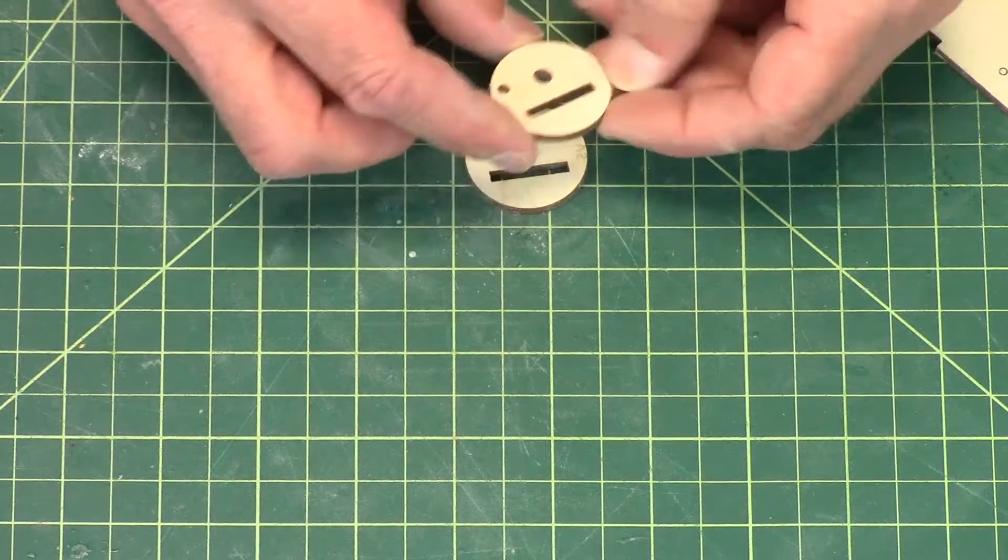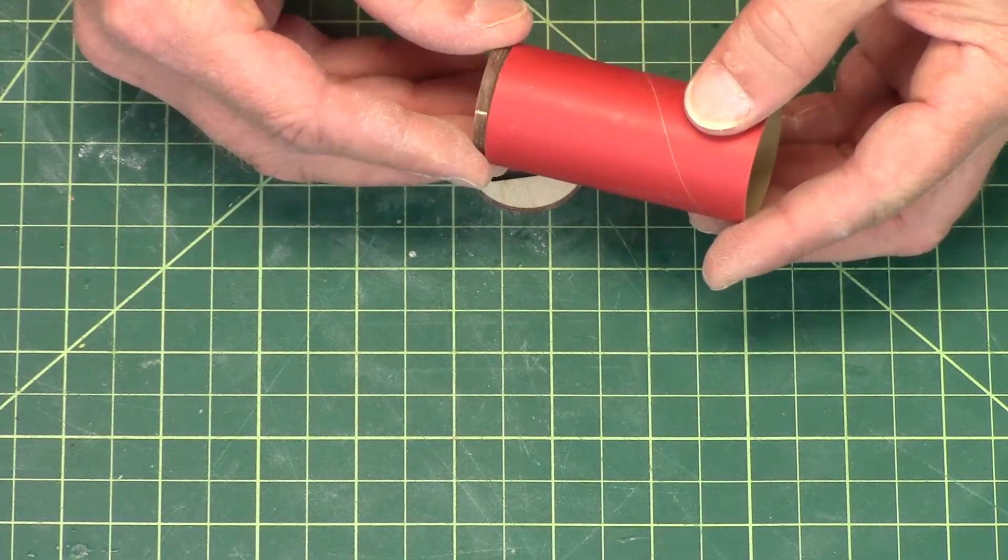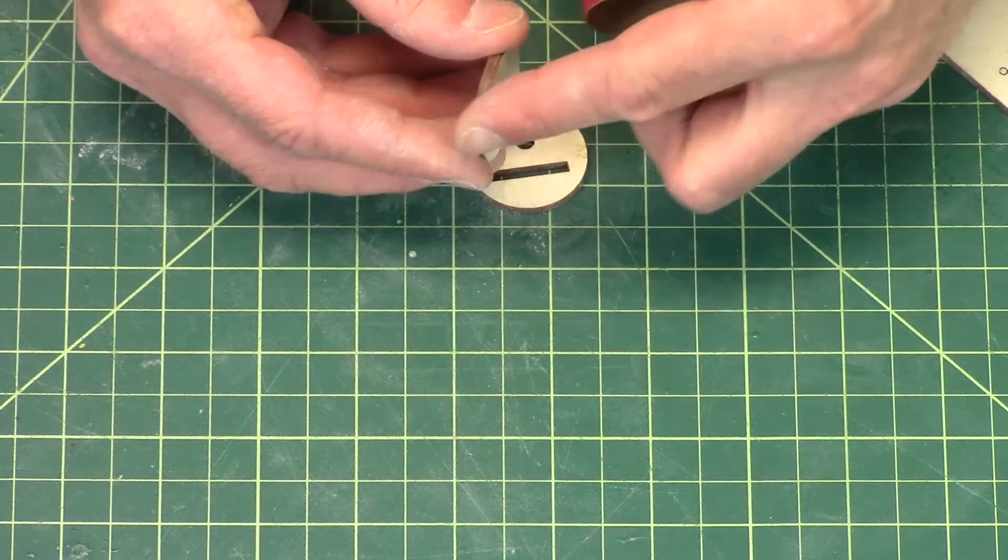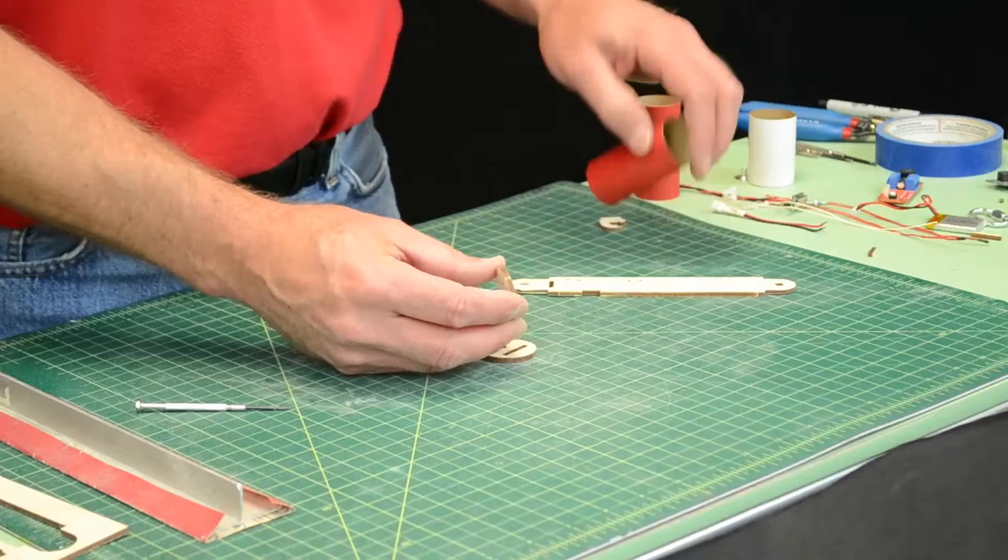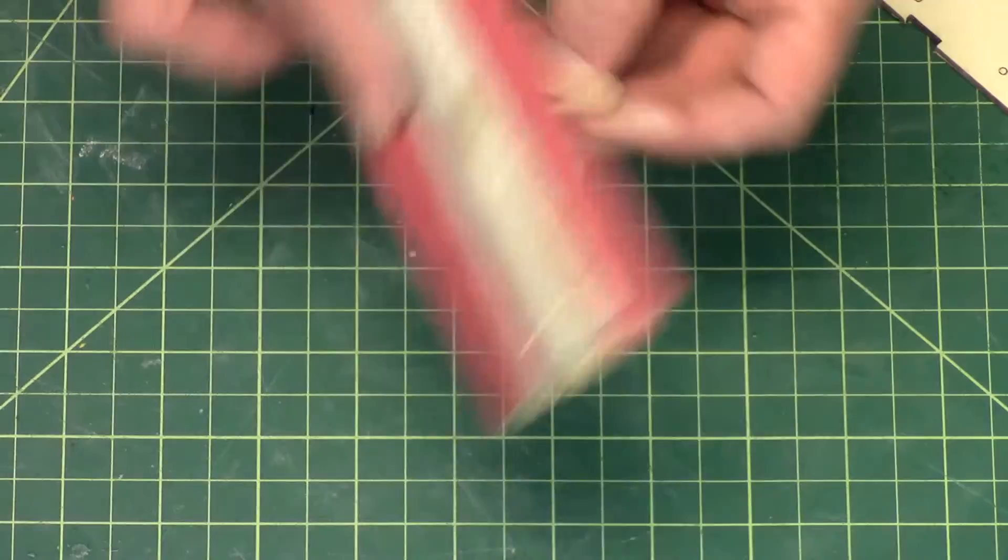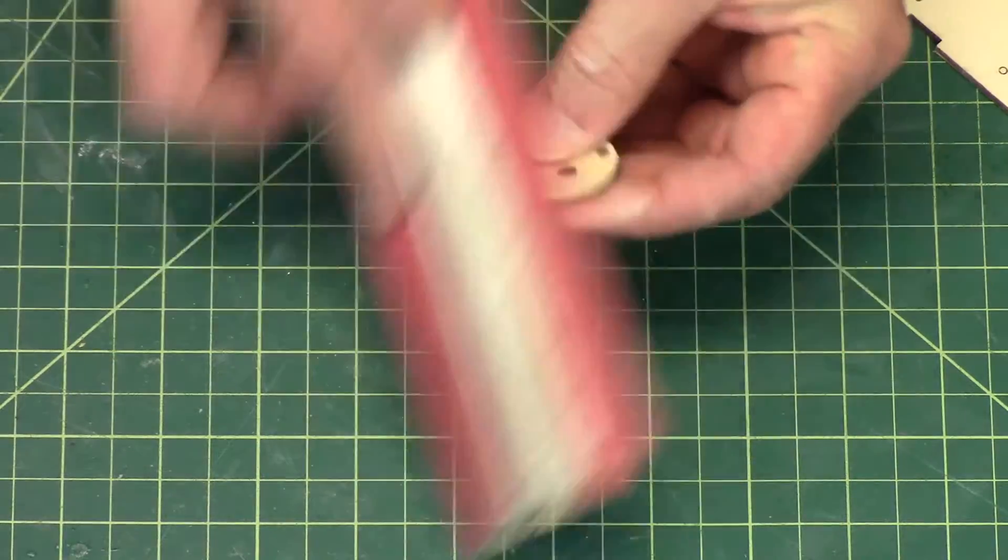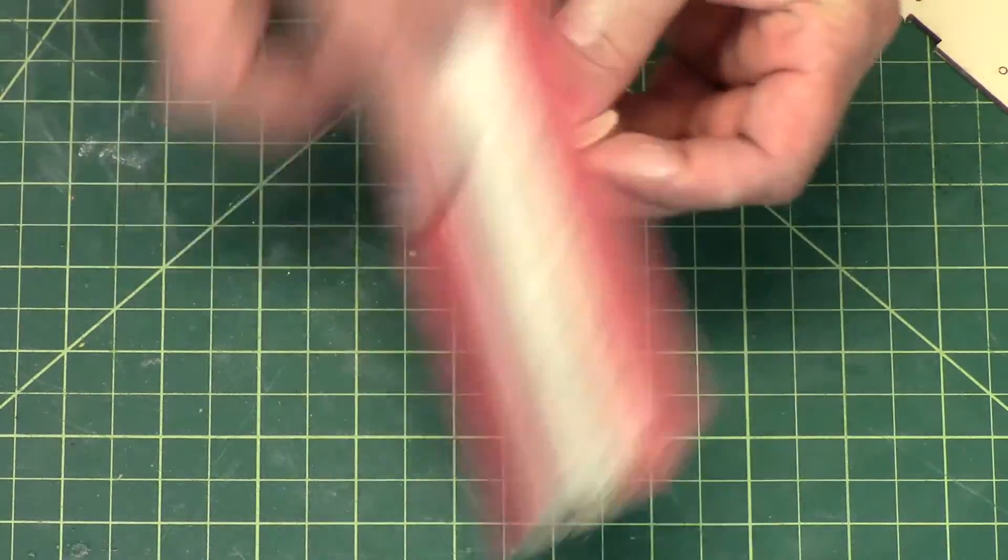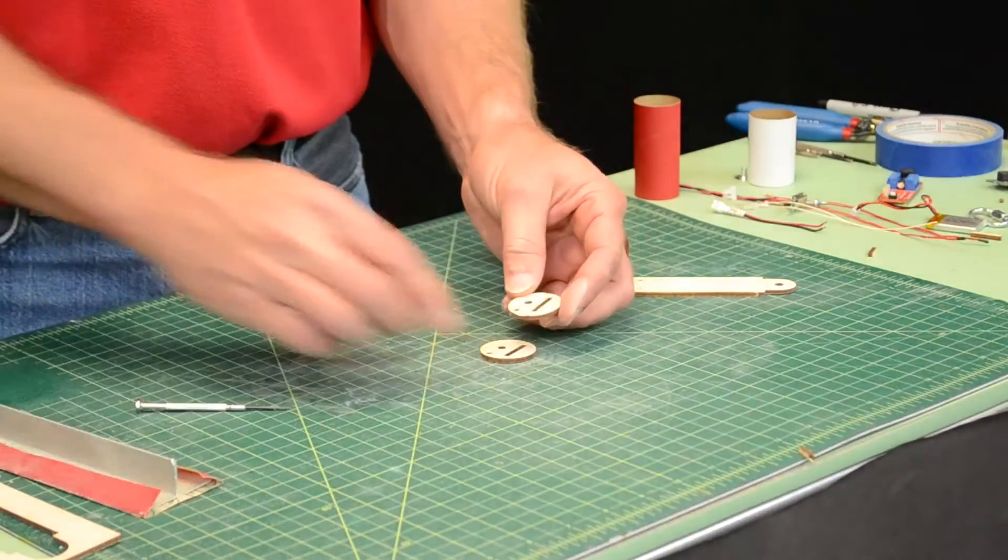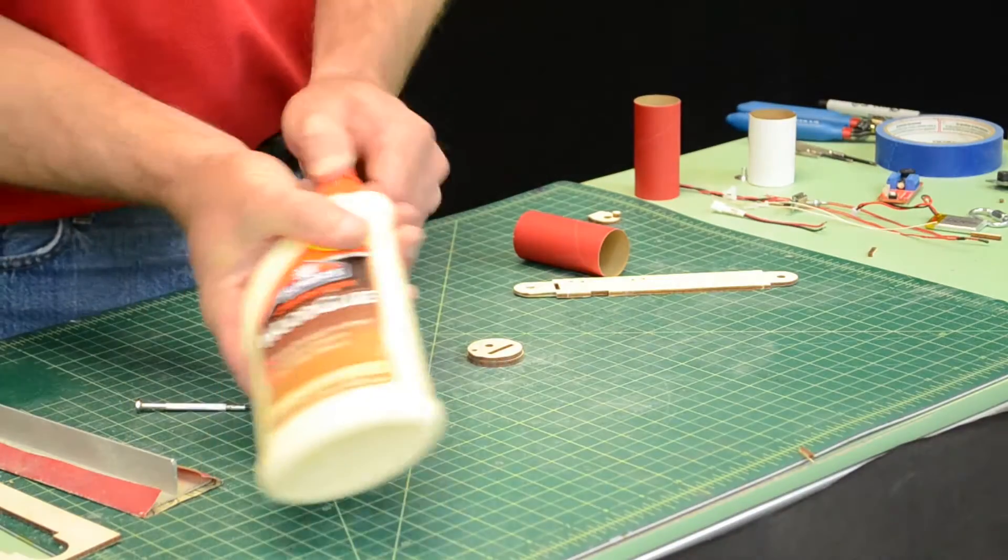I'm going to chamfer that edge a little bit, because it's going to need to slide into here. If it's radiused a little bit, then it will go in just ever so easier. You can see I'm just kind of rounding off just that edge, chamfering it a little bit to make it easier to put together.